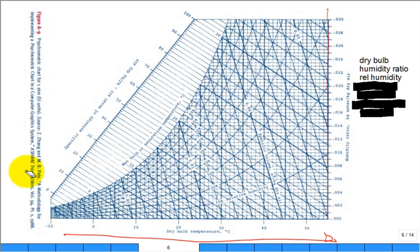Where are lines of constant relative humidity on this chart? What do they look like? You can see some fingers going like this — basically this is a line of constant relative humidity. Where is the line of constant 50% relative humidity? Right about here — that 50%. Those are three things identified.